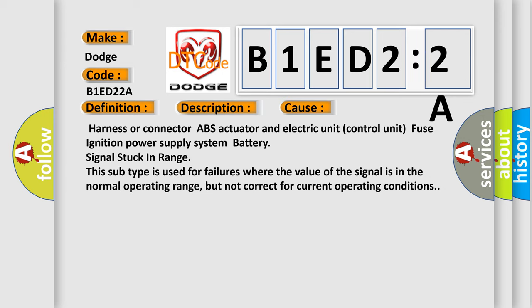Harness or connector ABS actuator and electric unit control unit fuse ignition power supply system battery signal stuck in range. This subtype is used for failures where the value of the signal is in the normal operating range, but not correct for current operating conditions.